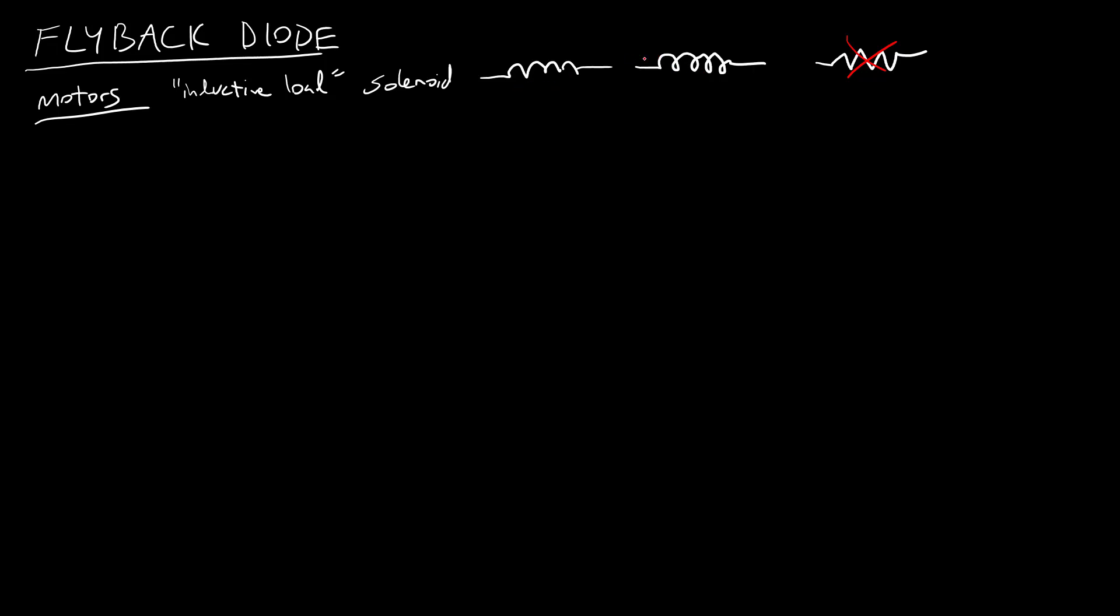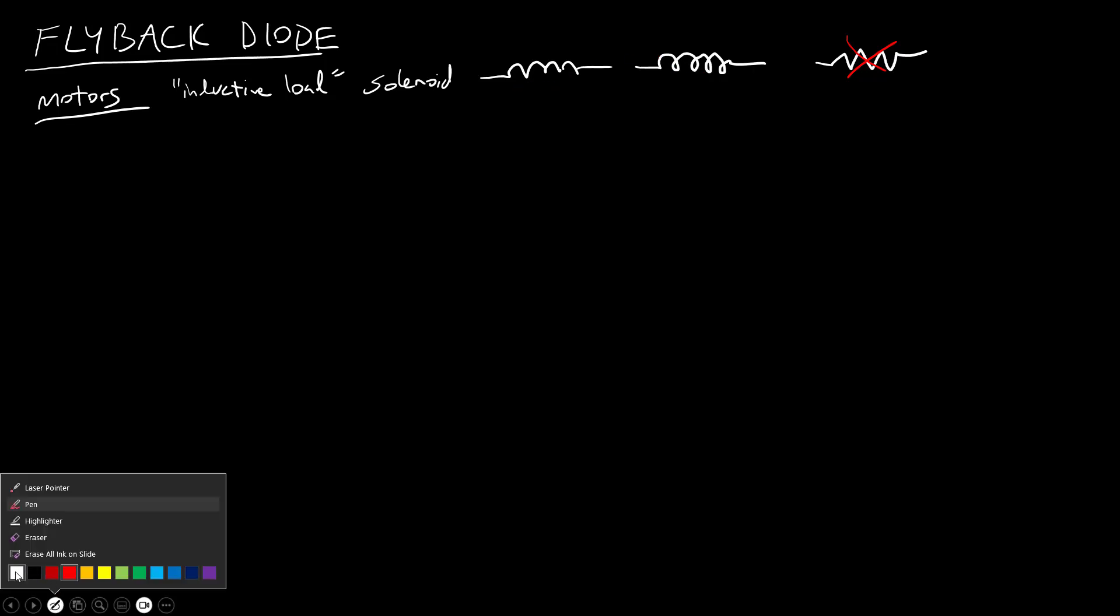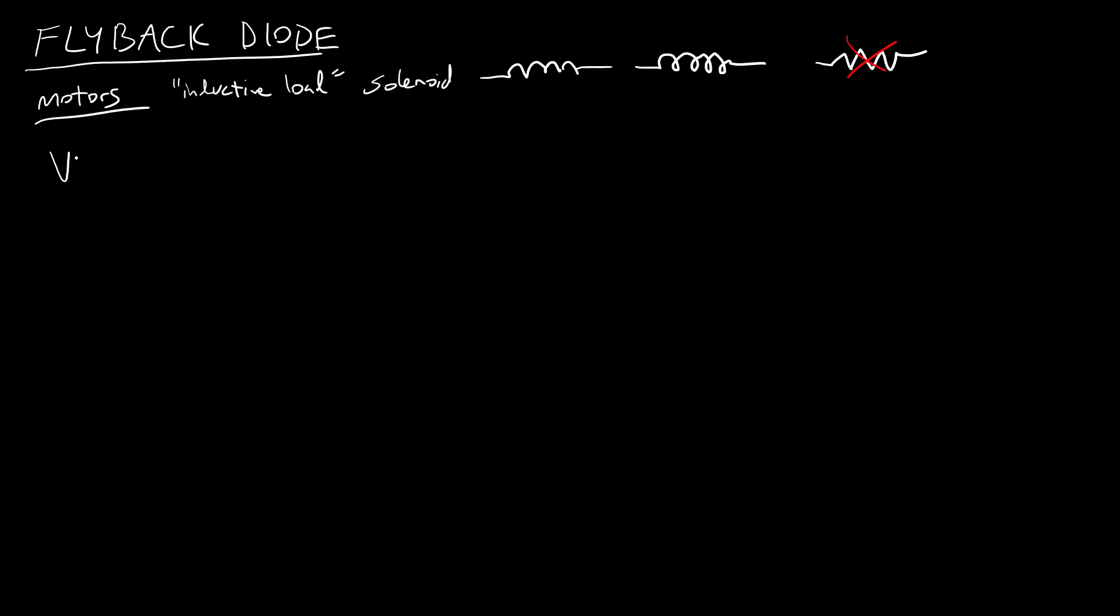We talked about inductors earlier in this video series and you might remember I have an equation for an inductor V equals L di dt. So a quick recap of inductors before we get to the diode part here. And this equation means that if I have a very large change in current for an inductor, so a large value for this derivative, that is going to induce a large voltage across the inductor. And that can be bad, for example.